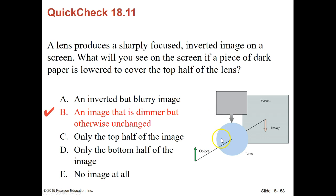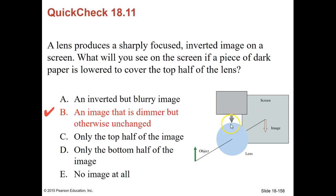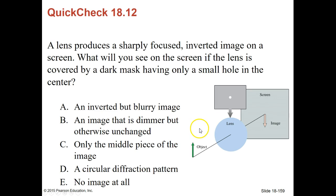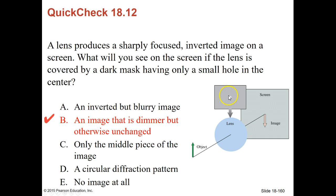If you take a card and place it so that it covers half the lens, it wouldn't block the top half of the object — all it would do is just make the image dimmer because you still have a lot of light that can go through the rest of that lens itself. For the next quick check: a lens produces a sharply focused inverted image on the screen — what will you see if the lens is covered by a dark mask having only a small hole in the middle? You'll see an image that's dimmer but otherwise unchanged, because you still have light rays being bent at different places through that hole in the lens.